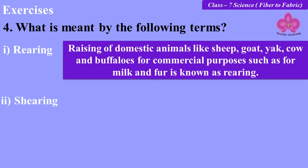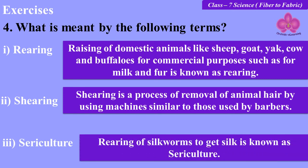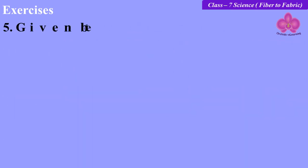Shearing: shearing is the process of removal of animal hair by using machines similar to those used by barbers. Sericulture: the rearing of silkworms to get silk is known as sericulture.